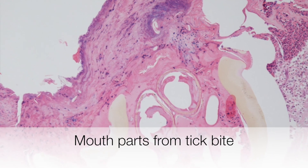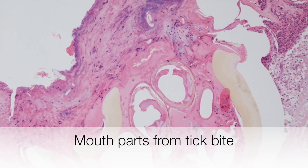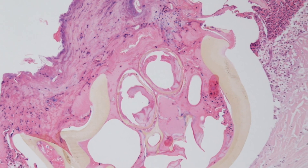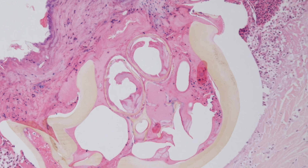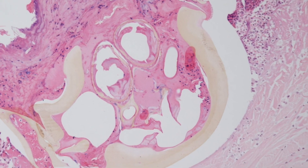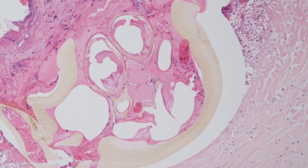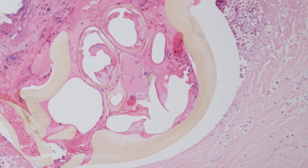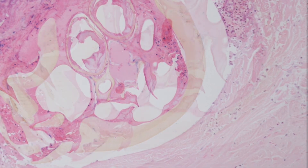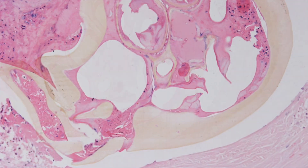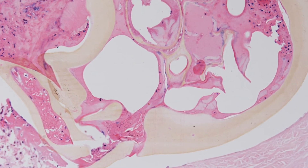Looking at the skin biopsy at a higher power you can see not only is the skin ulcerated and inflamed, but there is a yellow structure and this is the chitin of the exoskeleton of the tick, enabling the diagnosis of a tick bite to be made.